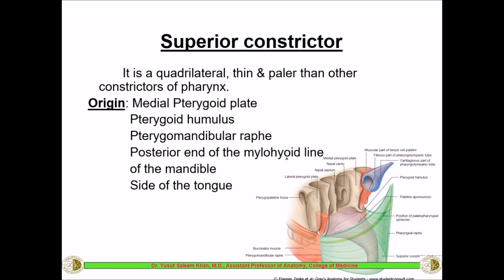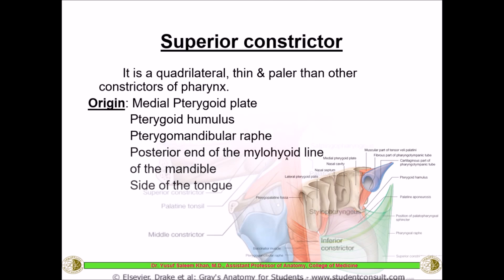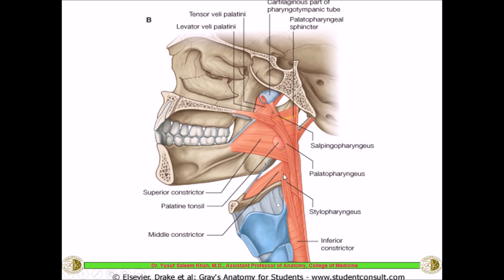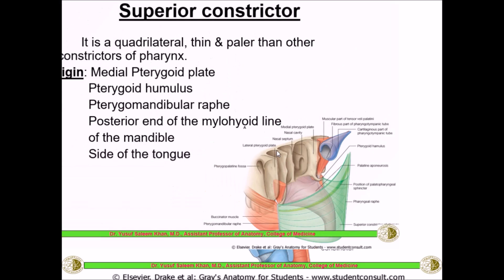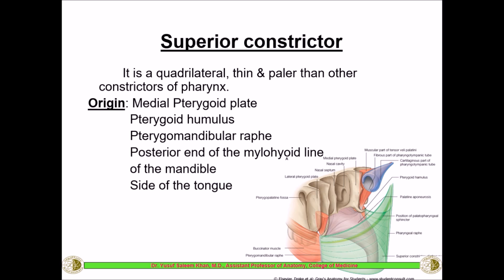The superior constrictor is a quadrilateral muscle, thin and paler than the other constrictors. Its origin is from several points at the base of the skull: the medial pterygoid plate, the pterygoid hamulus — a small projection from the medial pterygoid plate — and the pterygomandibular raphe. The posterior opening of the nasal cavity is visible here, and this muscle takes origin from the medial pterygoid plate.